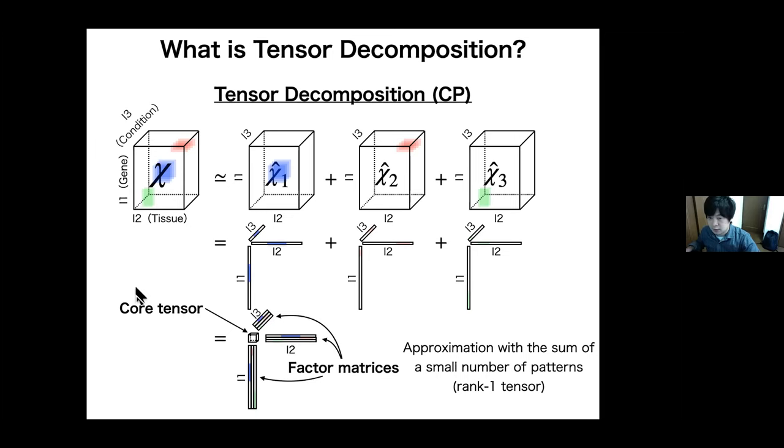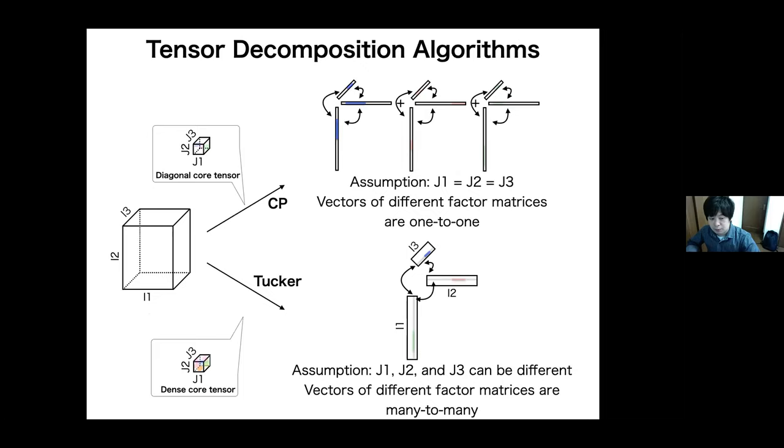So there are two types of tensor decomposition algorithms: CP decomposition and Tucker decomposition. In CP decomposition, the core tensor is assumed to be diagonal, which means we have to set the number of low dimensions of all directions to be the same. So J1 equals J2 equals J3. And also the relationship of vectors of different factor matrices are one to one. On the other hand, in Tucker decomposition, the core tensor is assumed to be dense, which means J1, J2, and J3 can be a different number, and the vectors of different factor matrices are many to many.